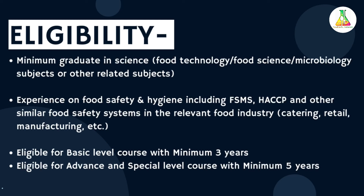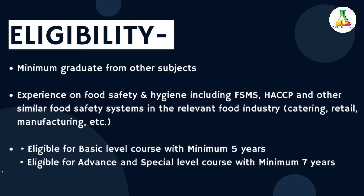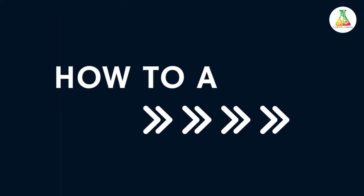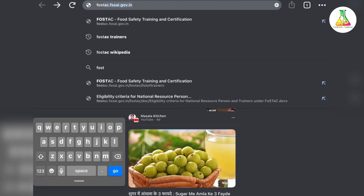The next qualification option for trainers is a minimum graduate from other subjects. The work experience required is experience on food safety and hygiene including FSMS, HACCP, and other similar food safety systems in relevant food industries. They are eligible for the basic level course with a minimum of five years' experience, and eligible for advanced and special level courses with a minimum of seven years.